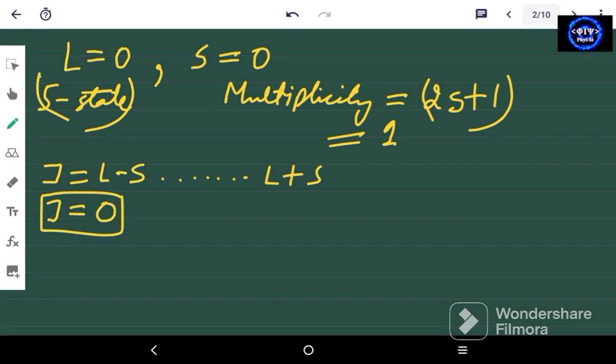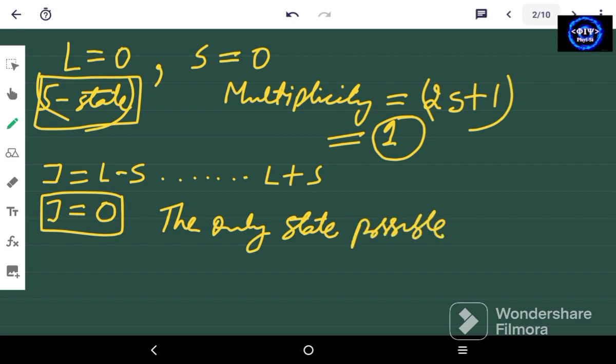So we have an S state, a multiplicity of 1 and J equals 0. So the only state possible is 1 capital S 0.